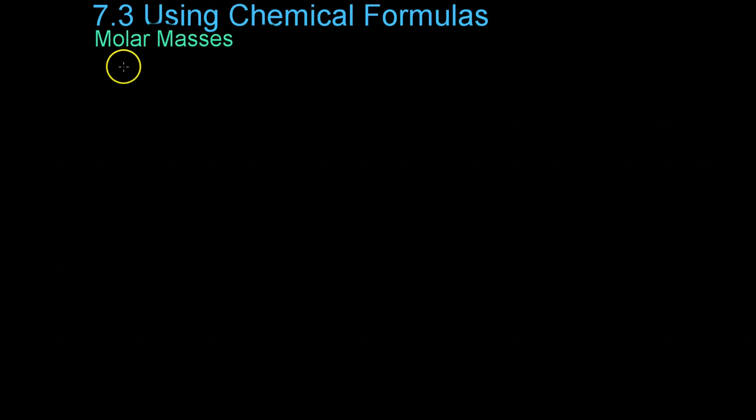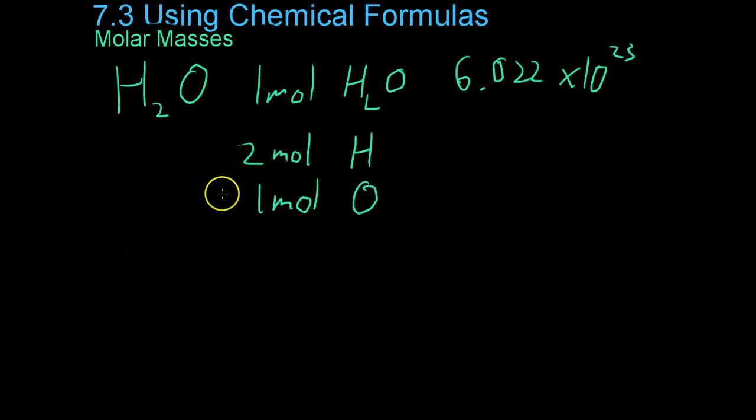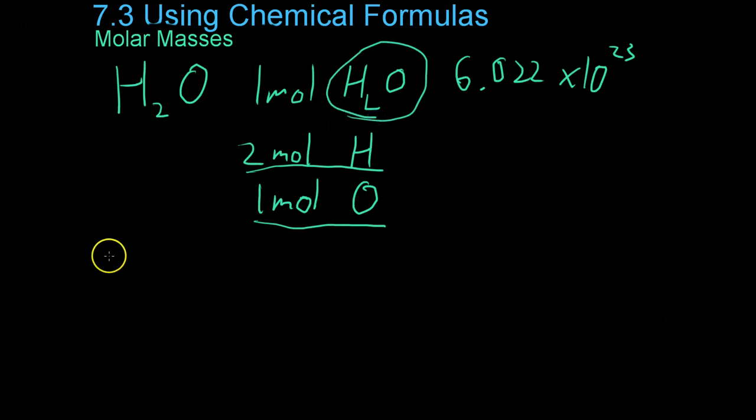Similarly, we can use the molar mass of various elements, which we learned about back in Chapter 3, to calculate the mass of each molecule or formula unit. So for example, if you have, again, let's use water, if you have one mole of water, which again is 6.022 times 10 to the 23rd molecules of water, you need two moles of hydrogen and one mole of oxygen. Now, you can use the known molar masses of each of these elements to calculate how much a mole of water would weigh. So let's do that mathematically right now.